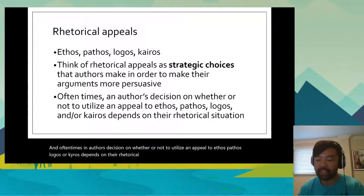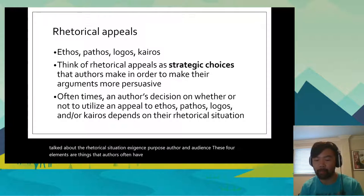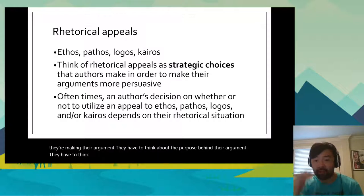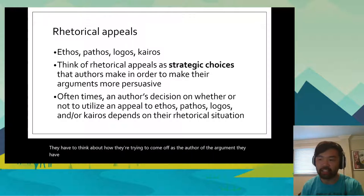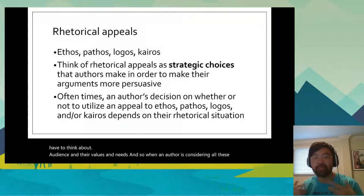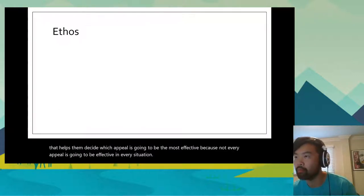What I mean by that is we've already talked about the rhetorical situation: exigence, purpose, author, and audience. These four elements are things that authors often have to consider when they are making their argument. They have to think about the purpose, how they come off as the author, and the audience's values and needs. That helps them decide which appeal is going to be the most effective, because not every appeal is going to be effective in every situation.